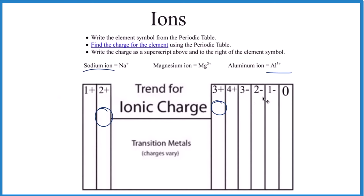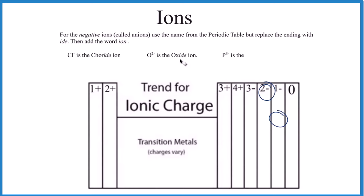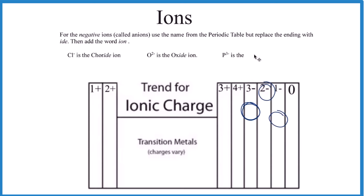For negative ions we have to watch out for the ones over here on the right side. What we do is write the name but change the ending to -ide. So instead of chlorine, we call it the chloride ion. For oxygen, give that a try — we take the ending and replace it with -ide, so we get the oxide ion. For phosphorus, it becomes the phosphide ion. That's how you name ions.